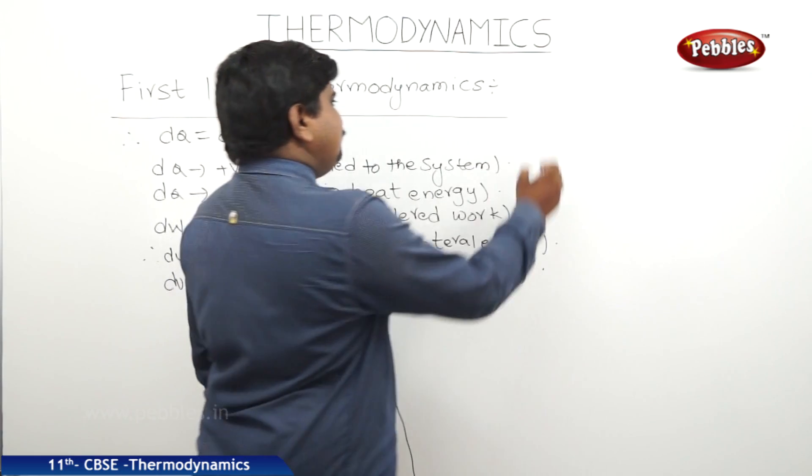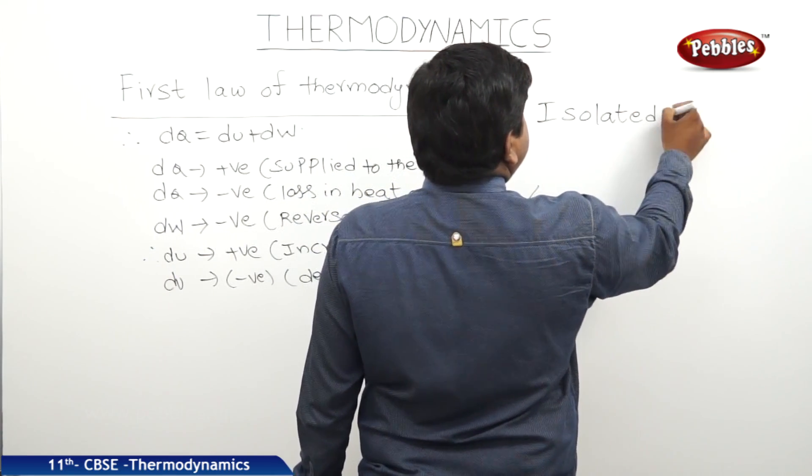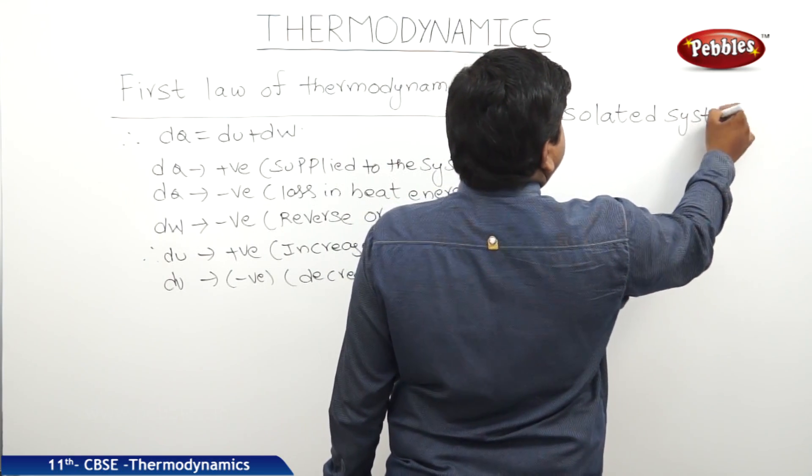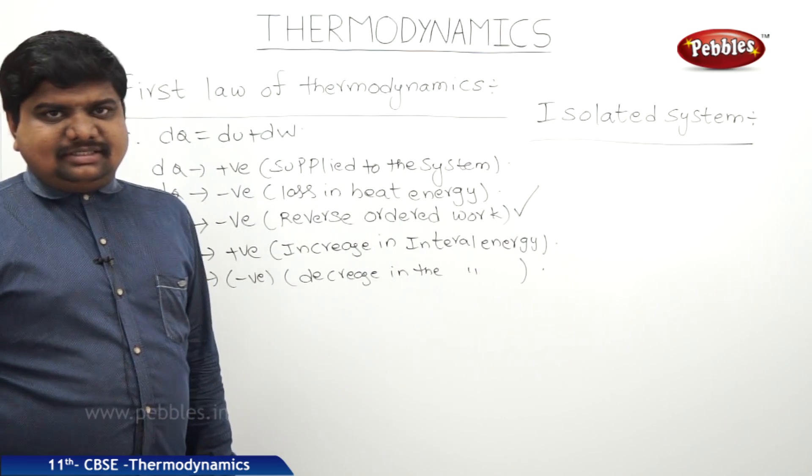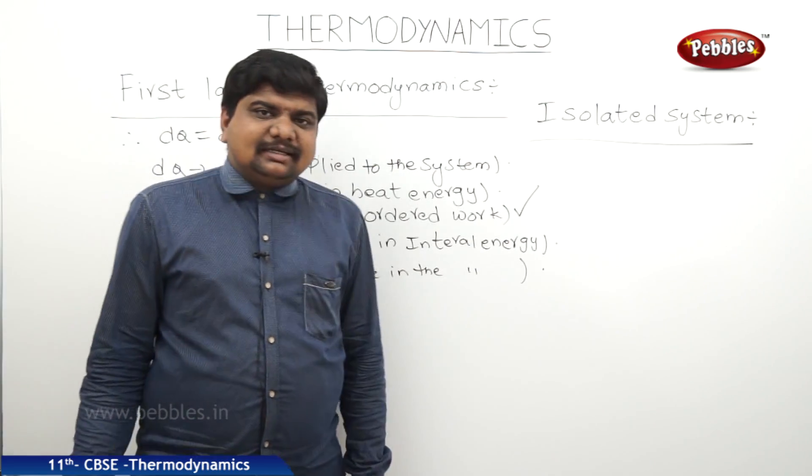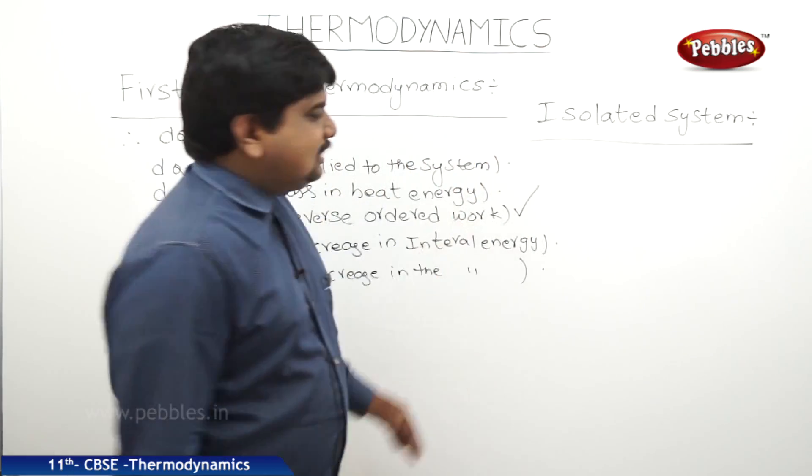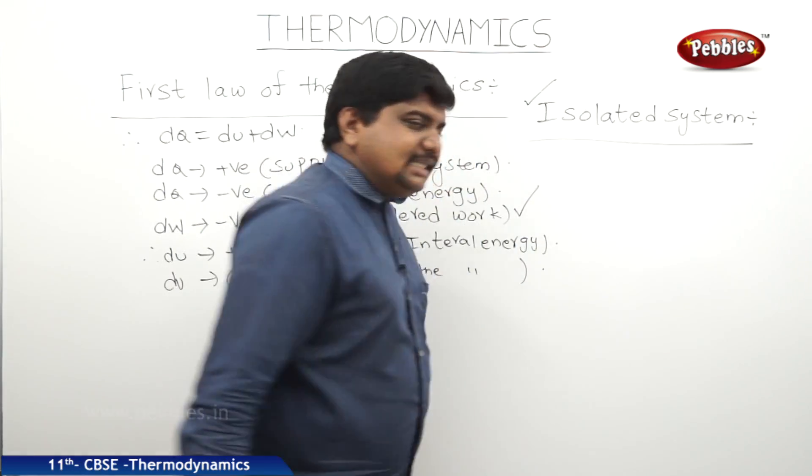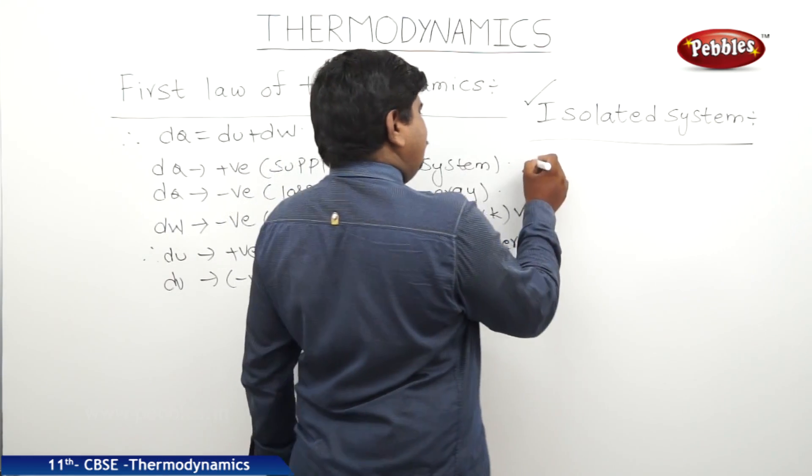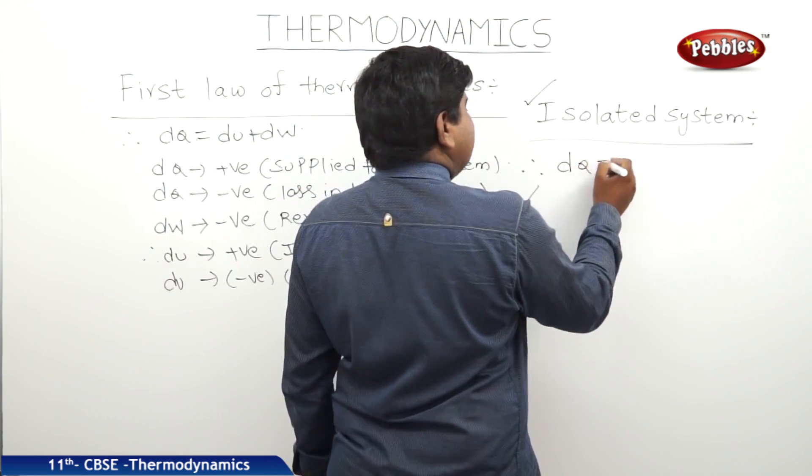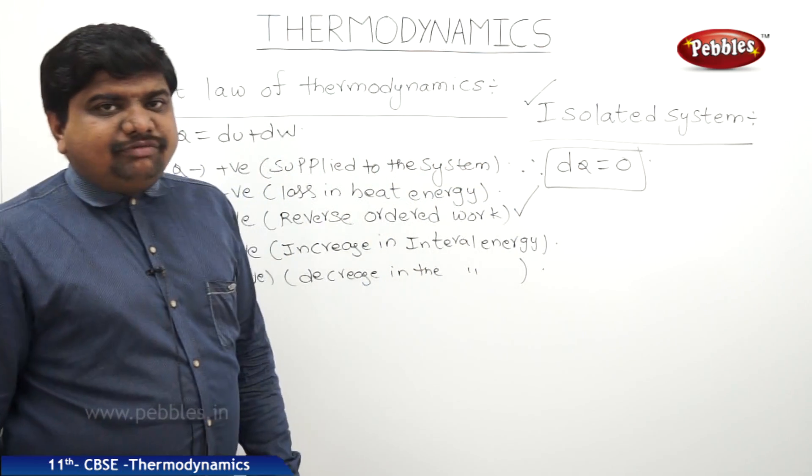If you go to the isolated system, isolated system means a system which is fixed at one constant position and independent of the surroundings. There is no transmission or transfer of the heat energy from system to the surroundings, because system was stayed at isolated state, single system. In this case, there is no possibility to increase the heat energy.